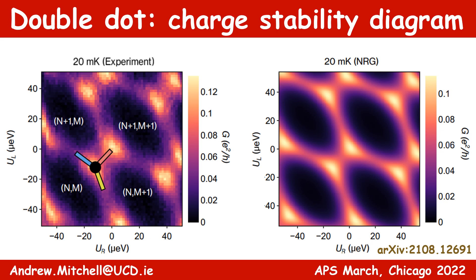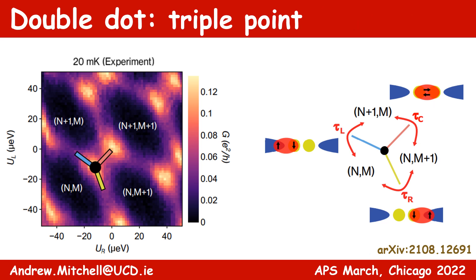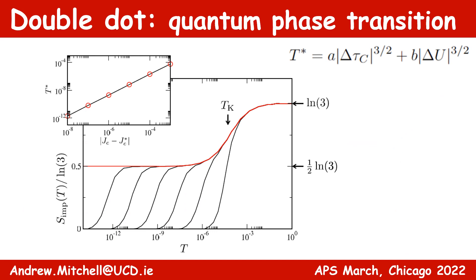An advantage of the computational solution is that we can go down to very low temperatures — here from 20 to 2 millikelvin — and when we do this we see that the triple points become well isolated and their conductance is relatively boosted. At the triple point itself, we have a competition between different kinds of Kondo effect: the left dot with the left lead, the right dot with the right lead, and the coherent inter-dot Kondo effect. The frustration between these Kondo effects leads to a quantum phase transition. We find that the entropy at the triple point goes from log 3 for the three degenerate states, down to half log 3, or log√3, which embodies fractionalized quasi-particles at this novel critical point.